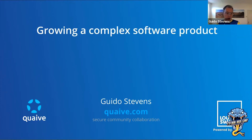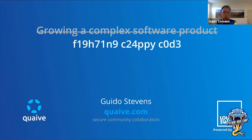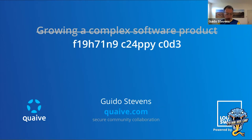I've advertised this talk as 'how to grow a complex software suite for the long run,' and that sounds really respectable. But actually, we could also say that this talk is about fighting crappy code. The problem is nobody wants to write crappy code, nobody wants to work at a place where they need to fix a lot of crappy code, and certainly no clients want to buy software from a shop that seems to ship crappy code. So we use fancy euphemisms like technical debt.